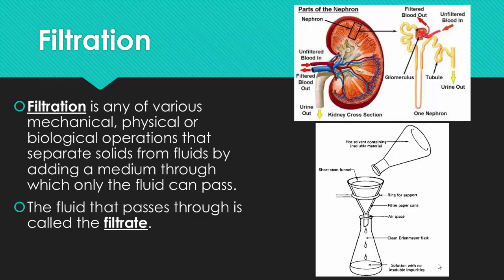Filtration normally occurs in biology, but it also happens in chemistry. It's a type of mechanical, physical, or biological operation that allows solid particles to be separated from a fluid. We use a medium that only the fluid can pass through. In the kidneys, it would be part of the nephron where the urea is squeezed out of your blood. In chemistry, we use filter paper. When your material is passed through the filter paper and drips into a beaker, that fluid is called a filtrate.